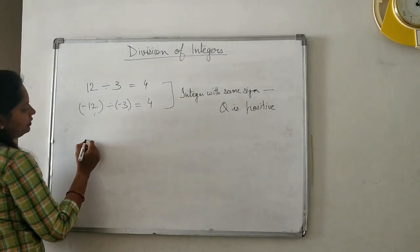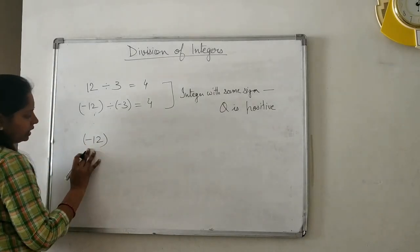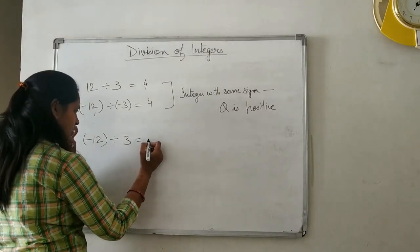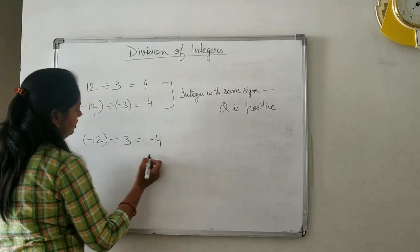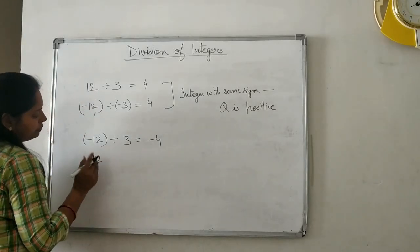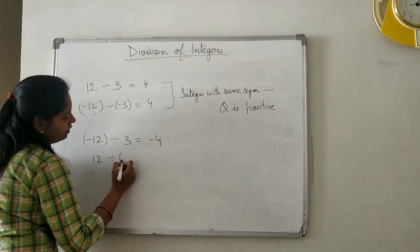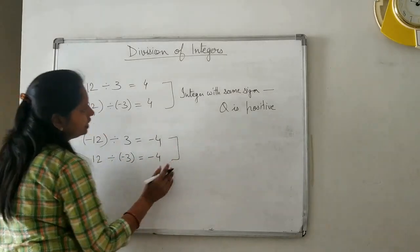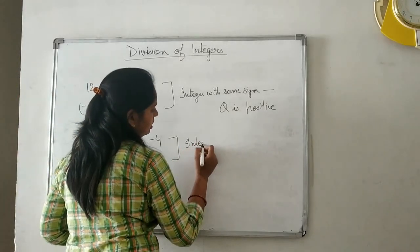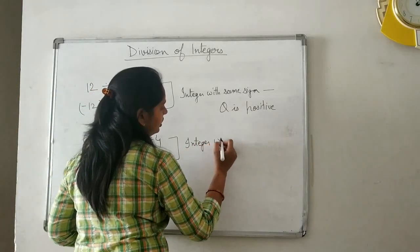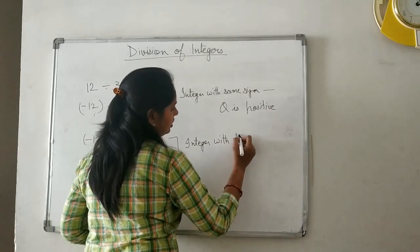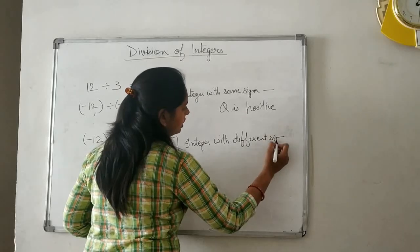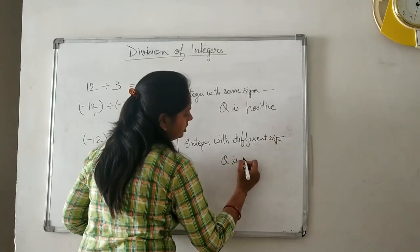Now, if one integer is negative and a negative integer is divided by a positive integer, then the answer will be negative. Similarly, if a positive integer is divided by a negative integer, the answer will also be negative. We can conclude that integers with different signs, when divided, give a negative quotient.